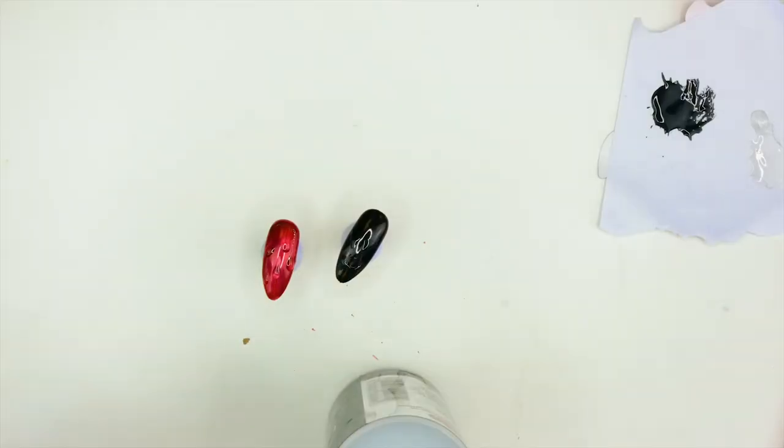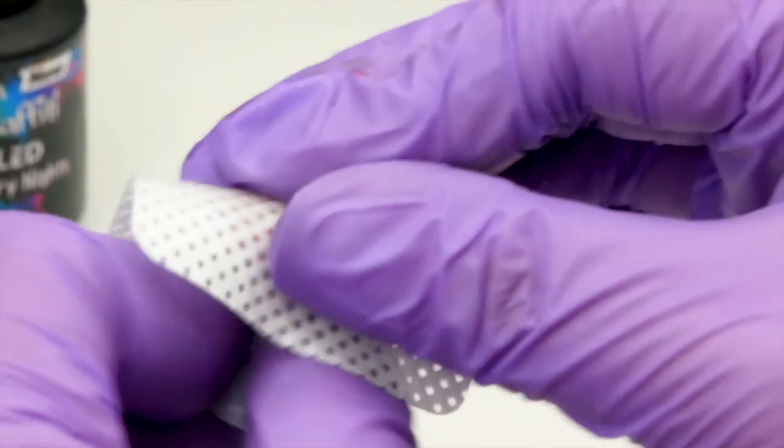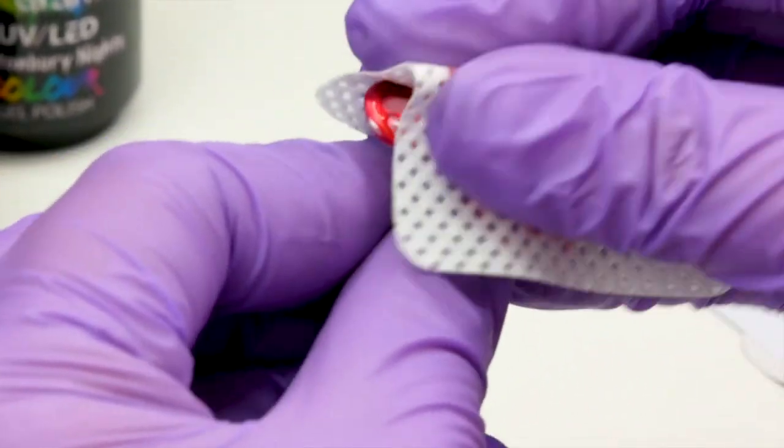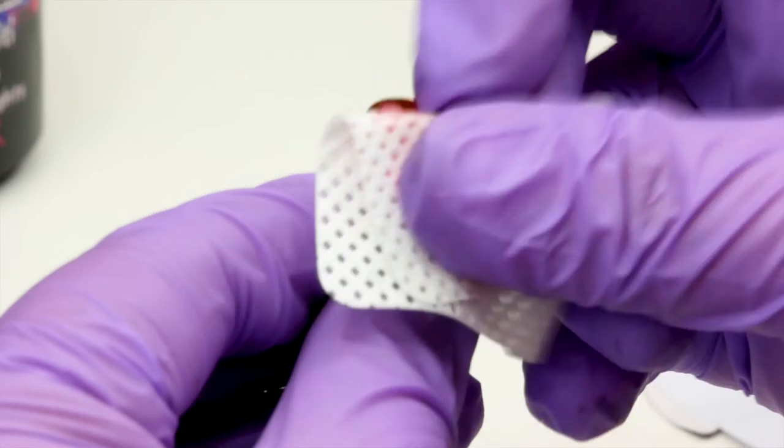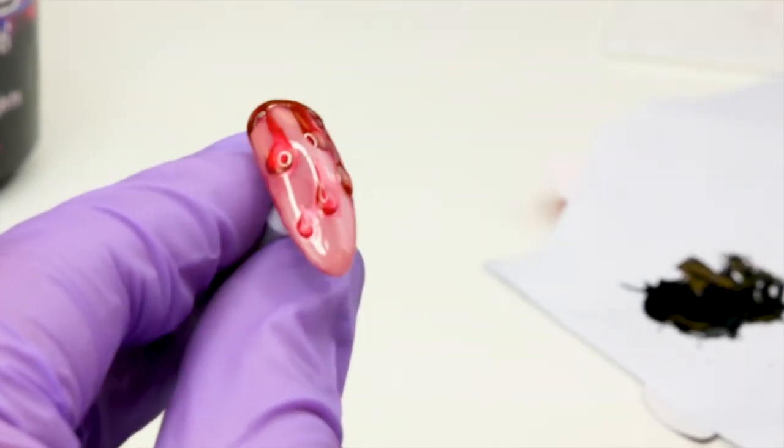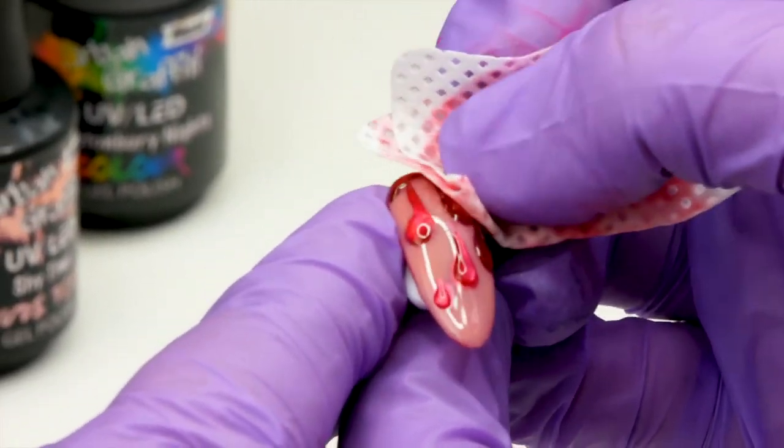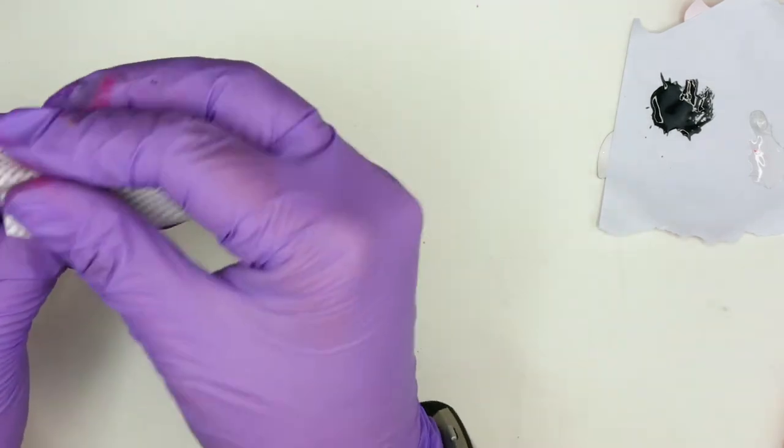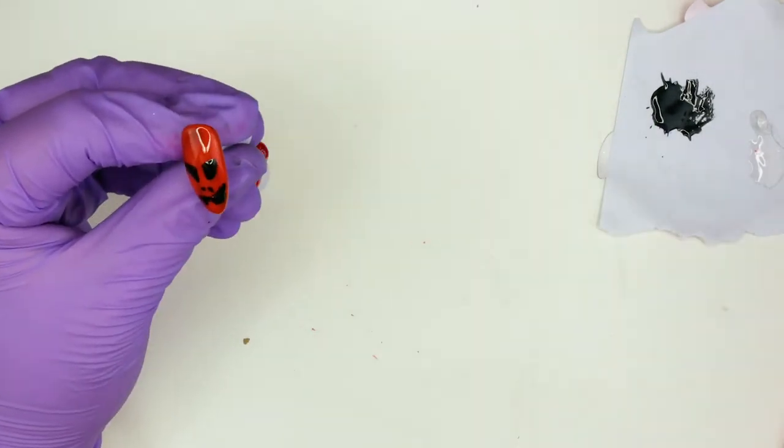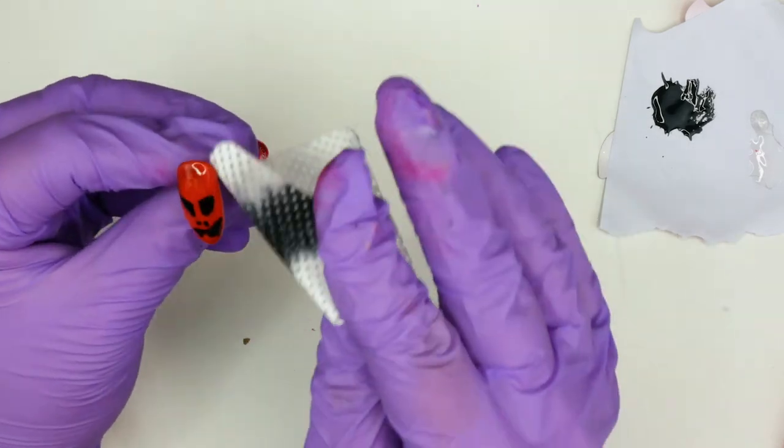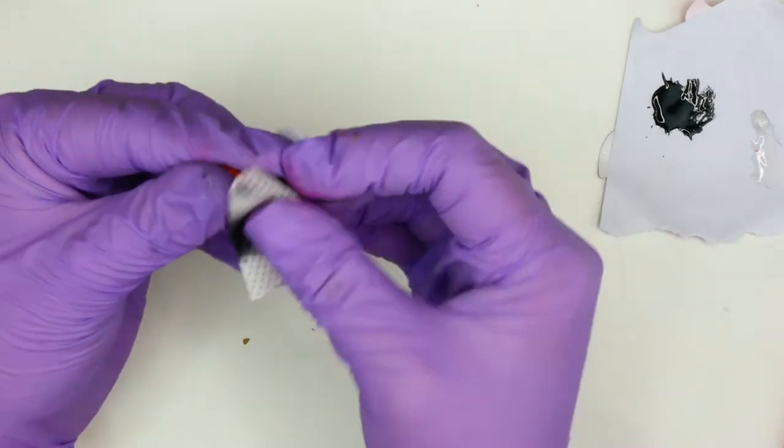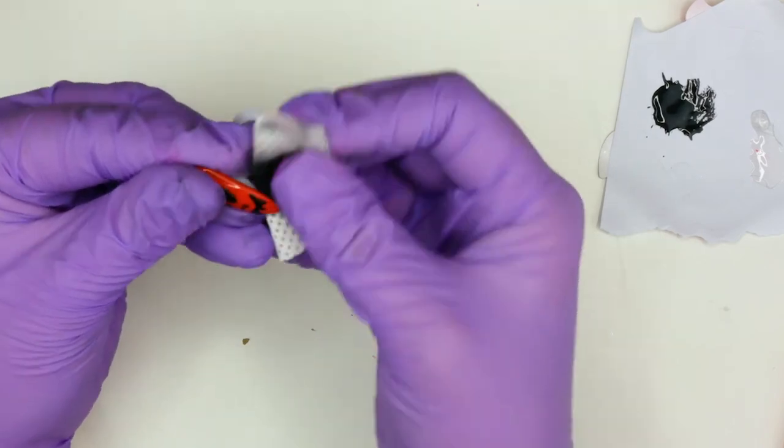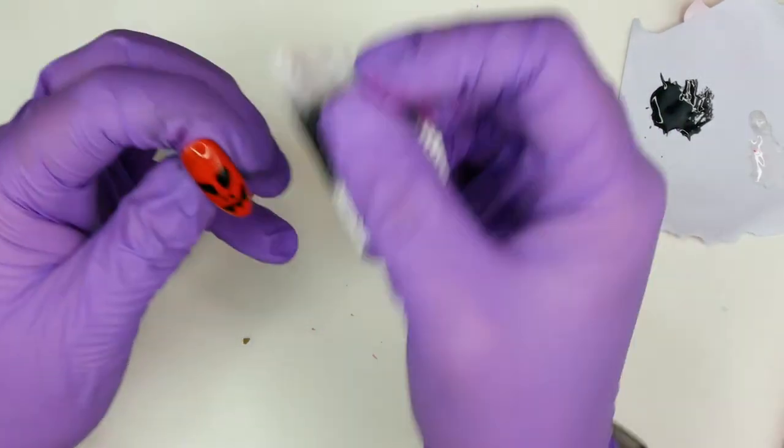With some pure acetone on a lint-free pad, we're going to wipe off the excess, making sure we're getting all the nooks and crannies. Make sure to get all that excess metallic paint off.